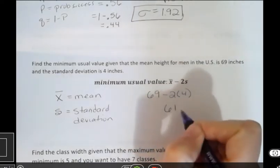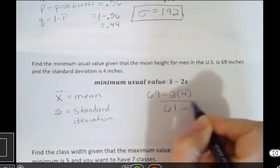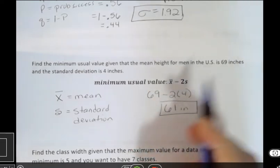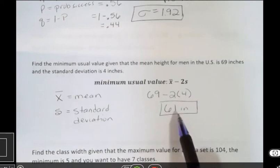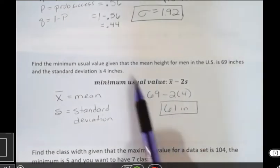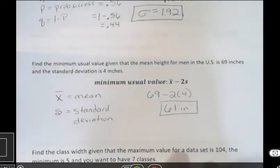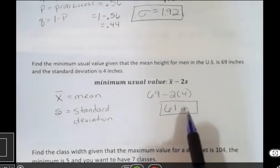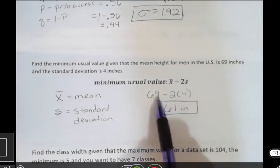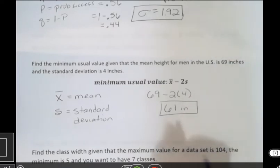And what does that mean? Well, what that means is that if you're a man who's 61 inches tall, you fall within the usual values. That's as short as you can be and still be in the usual values. If you're shorter than that, then you become outside of the norm. And you could also add 8 to that and go up and say that 77 inches or 6 foot 5 inches would be the end of the norm on the other end of that.